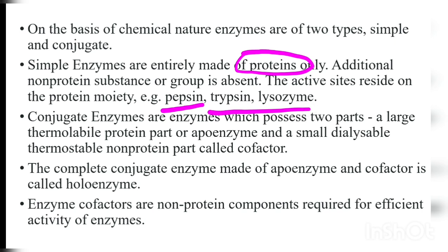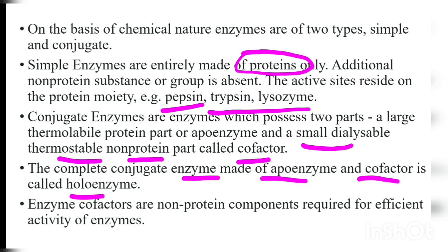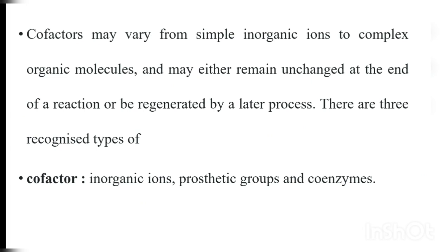Conjugate enzymes possess two parts: a large thermolabile protein part called apoenzyme, and a small dialyzable thermostable non-protein part called a cofactor. The complete conjugate enzyme made up of apoenzyme and cofactor is called a holoenzyme. Enzyme cofactors are non-protein components required for the efficient activity of the enzyme, so conjugate enzymes require cofactors to work efficiently.